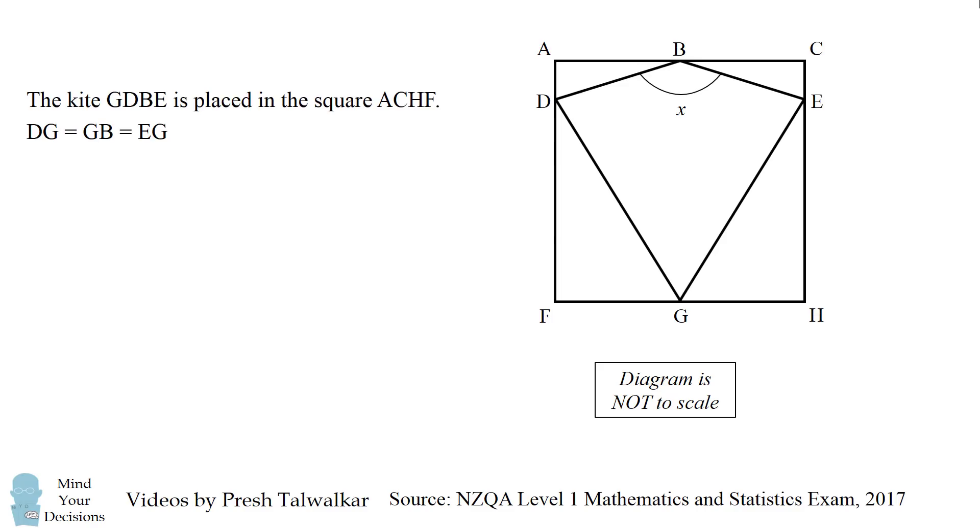The kite GDBE is placed in the square ACHF. DG equals GB equals EG. Calculate the size X of angle DBE. Justify your answer with clear geometric reasoning.